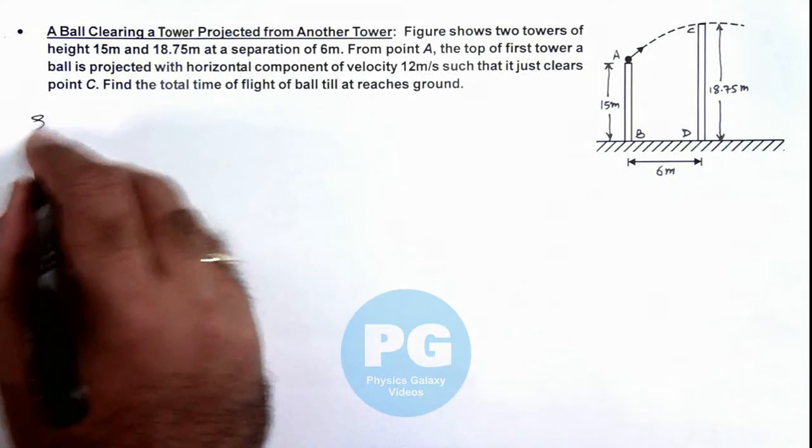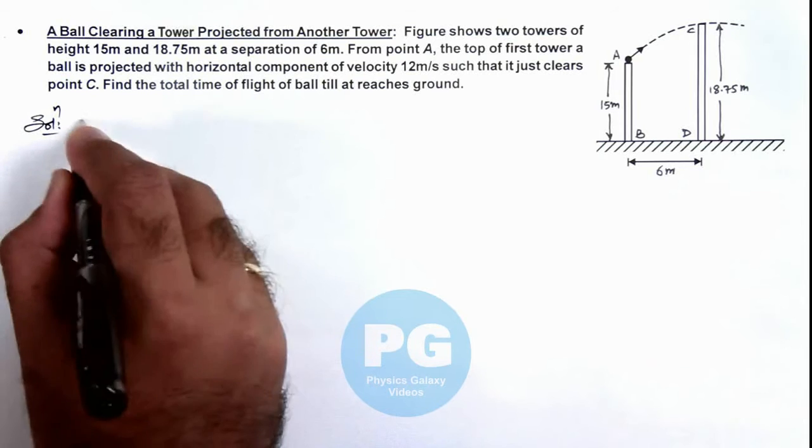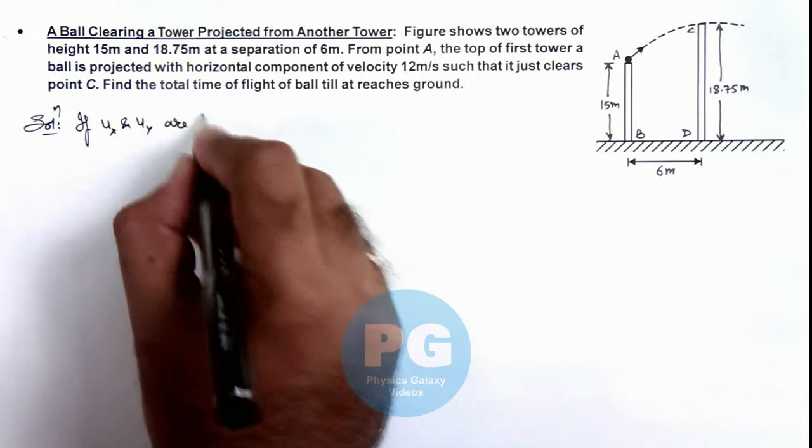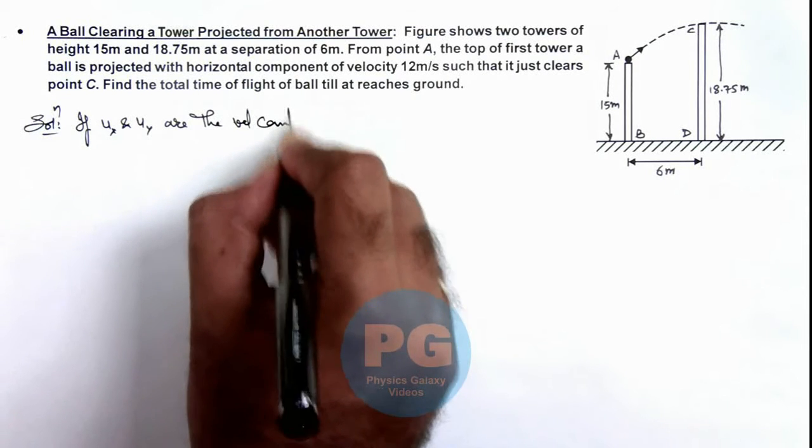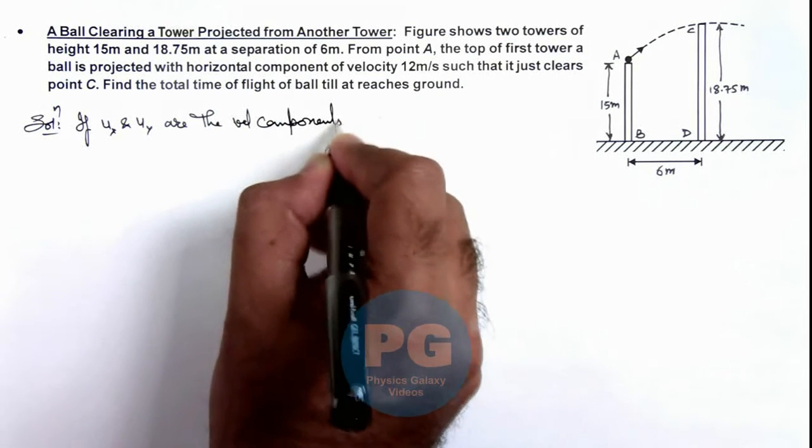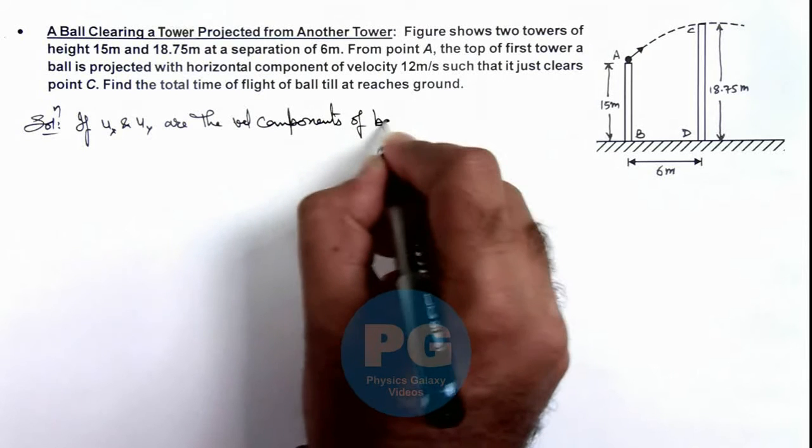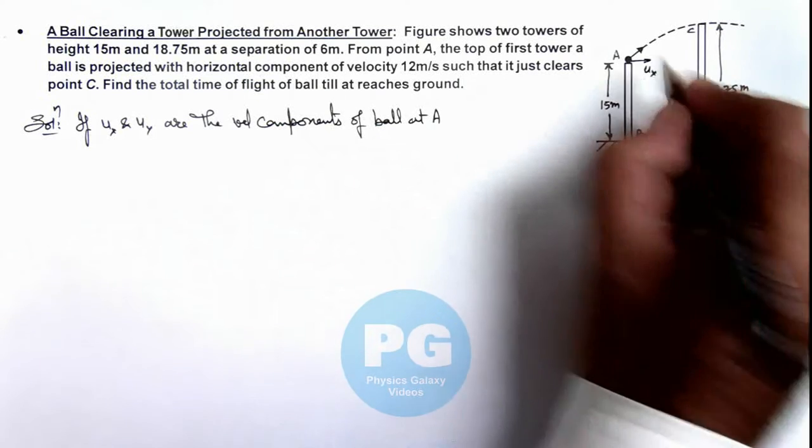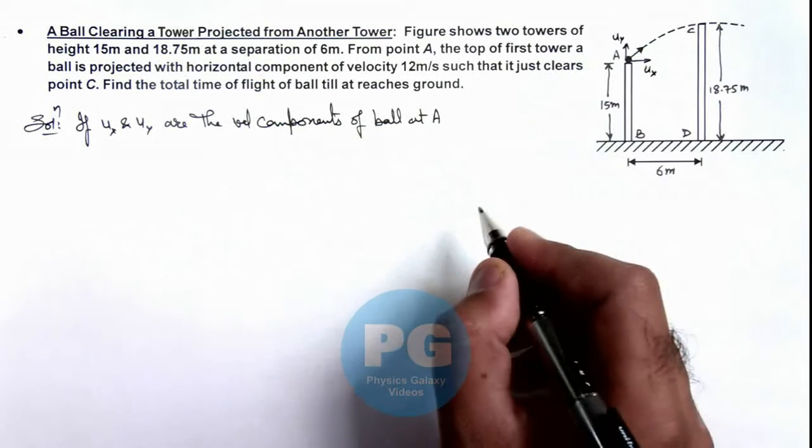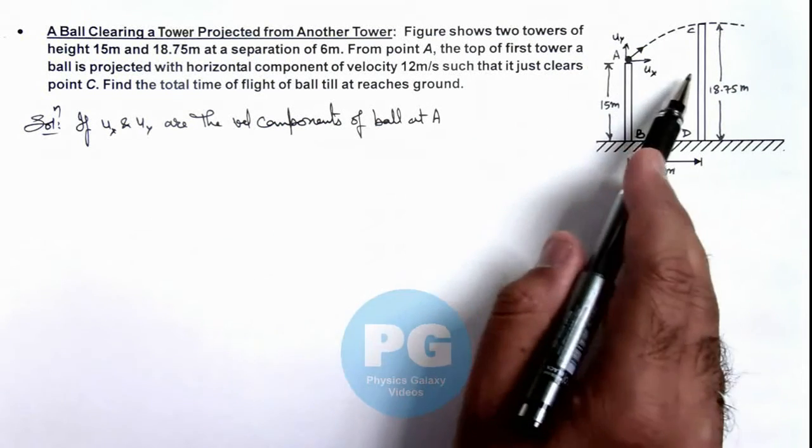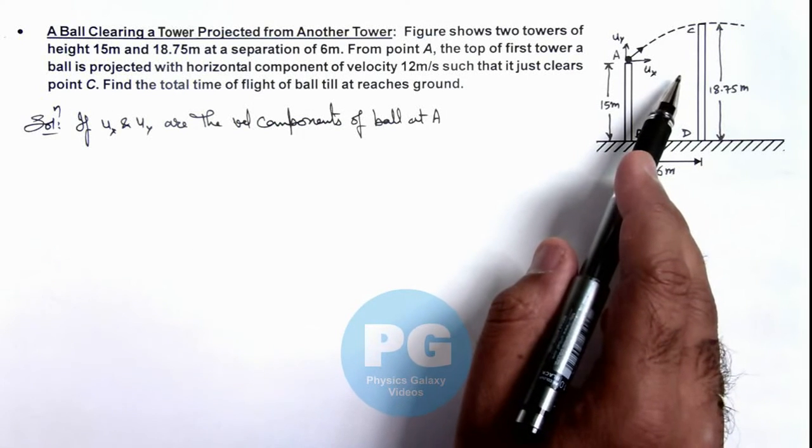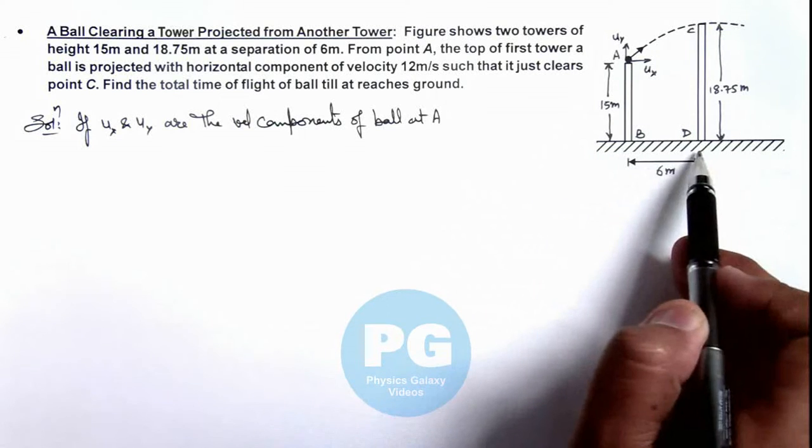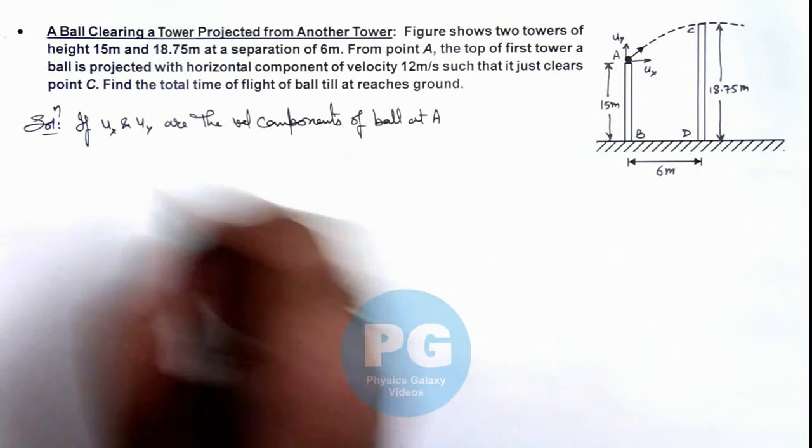Now in this situation here we can see if ux and uy are the velocity components of ball at point A. Say if it is having ux in horizontal direction and uy in vertical direction, then here we can directly write in this situation it is crossing the point C after traveling a horizontal distance of 6 meter.